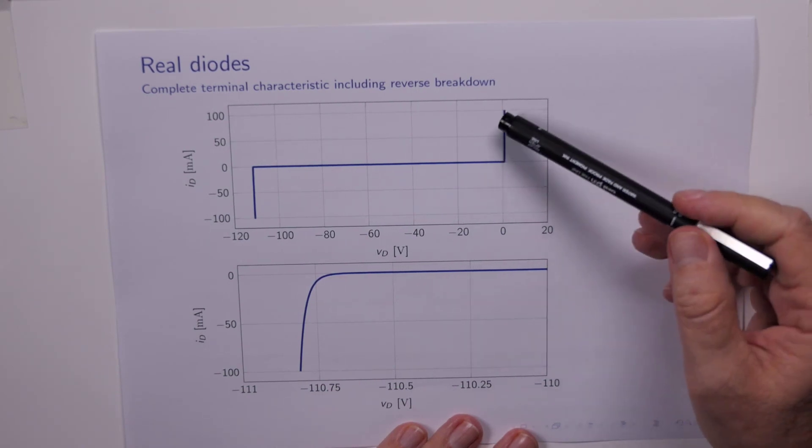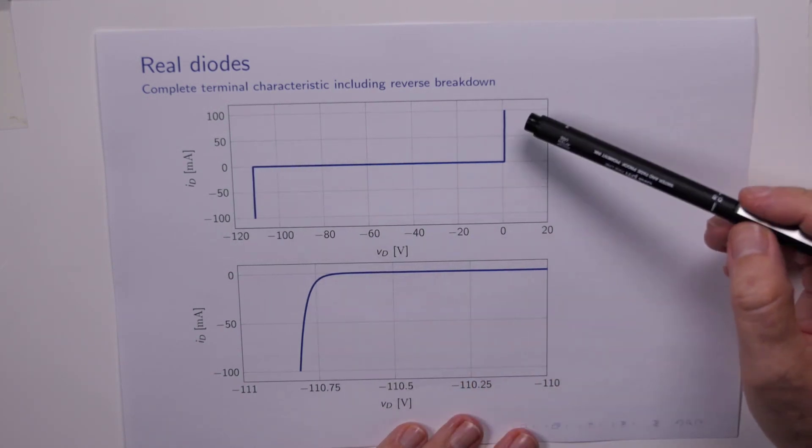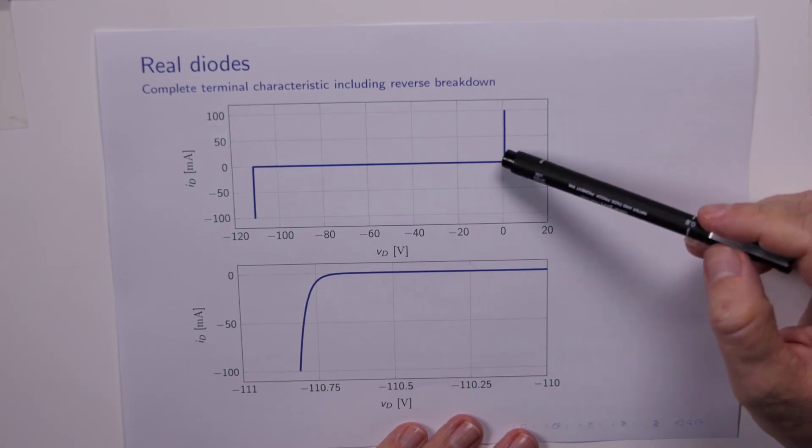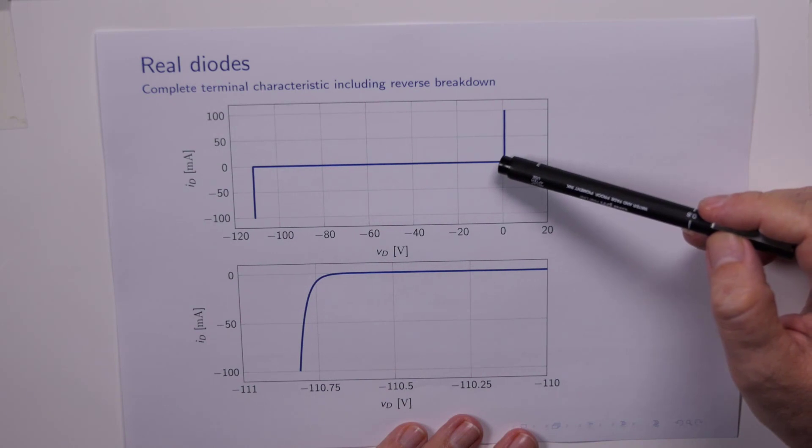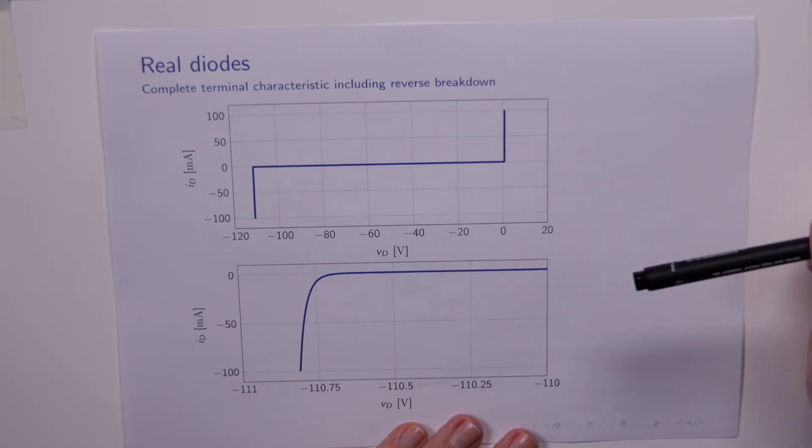So this diagram here, with the exception of the reverse breakdown area, does look very much like the ideal diode. And it's only when we need to concern ourselves with very small voltages around the origin that this thing starts to look decidedly non-ideal.